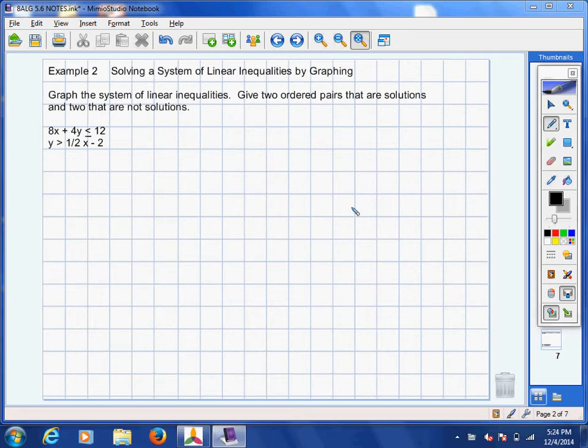8th graders, welcome back. We're in 5.6 example two. We're going to solve a system of linear inequalities by graphing. Now at this time, what you may want to do is grab colored pencils or two different colored pens. Some students don't need to see the different colors and some do. I like the color coding, so I will be color coding for you on this video just to set up a difference.